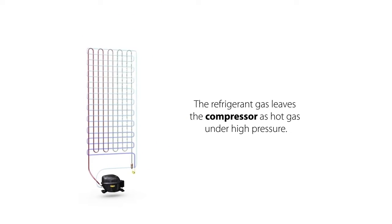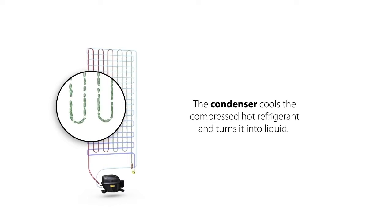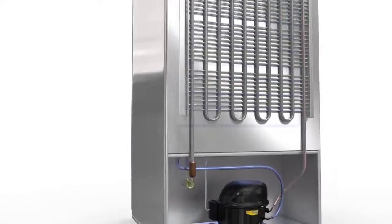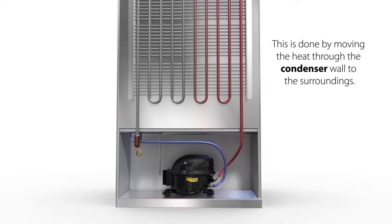The refrigerant gas leaves the compressor as hot gas under high pressure. The condenser cools the compressed hot refrigerant and turns it into liquid. This is done by moving the heat through the condenser wall to the surroundings.